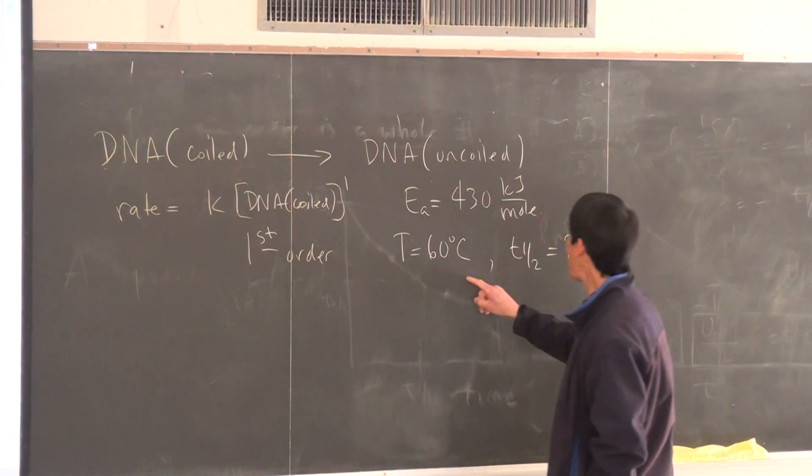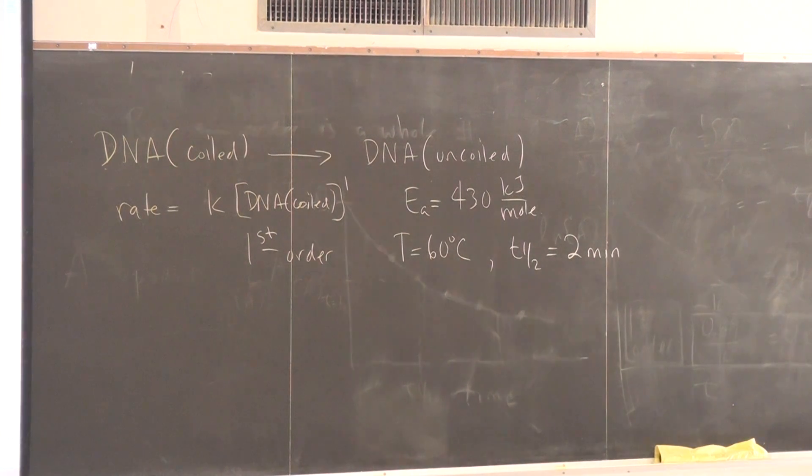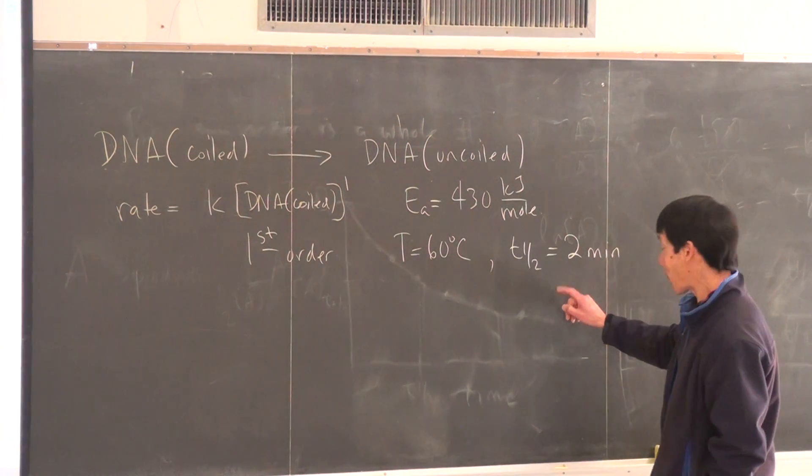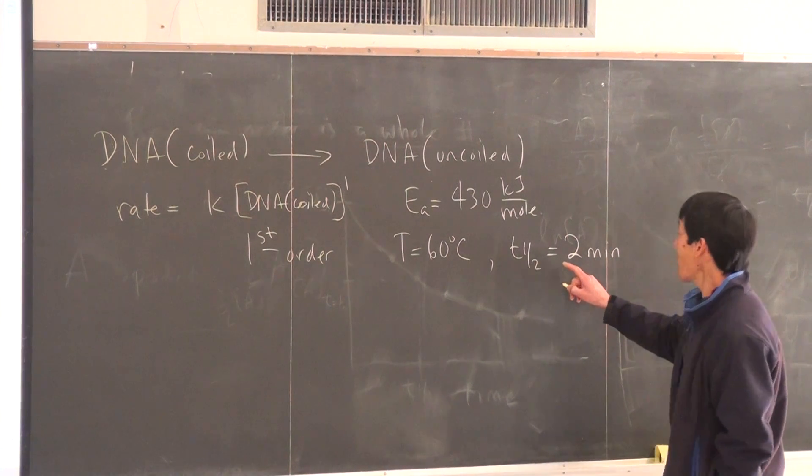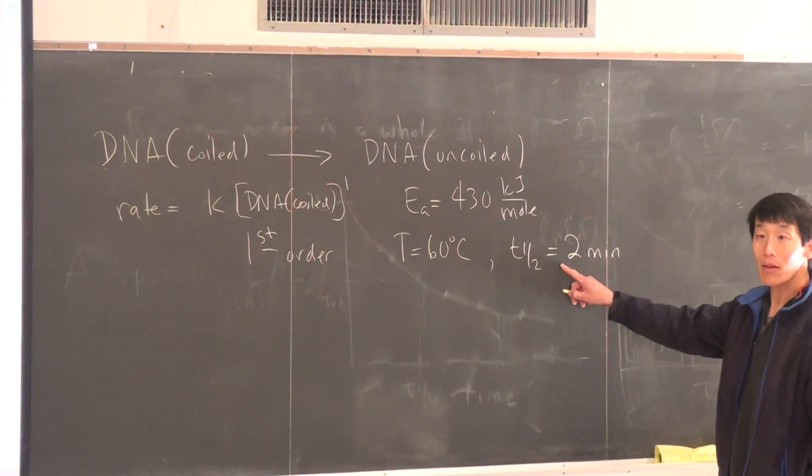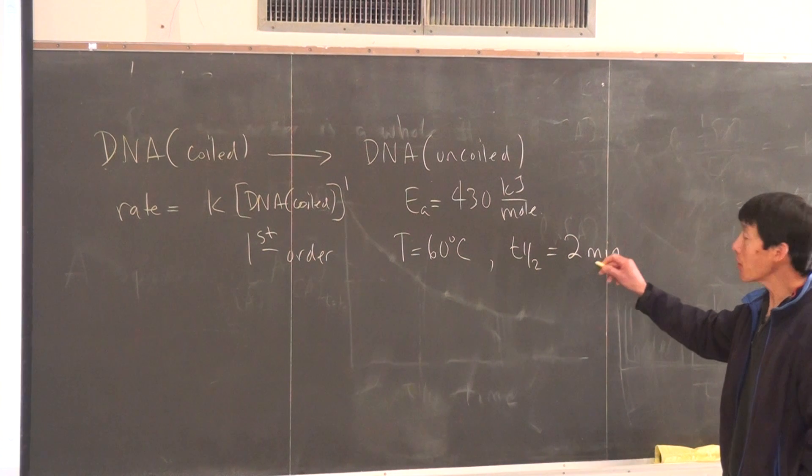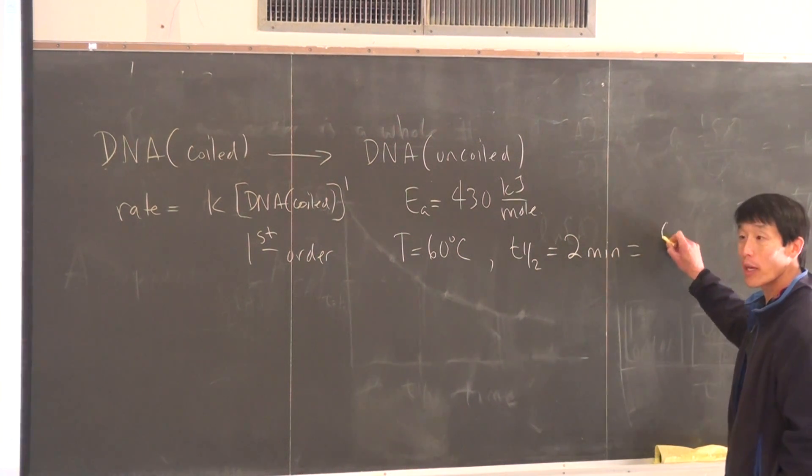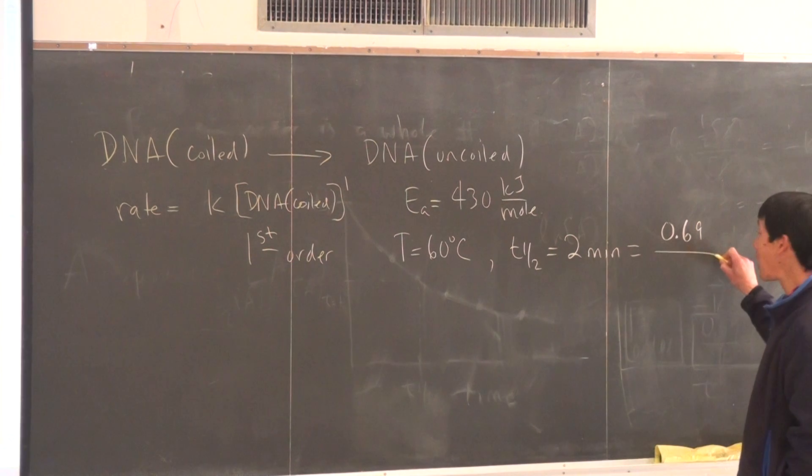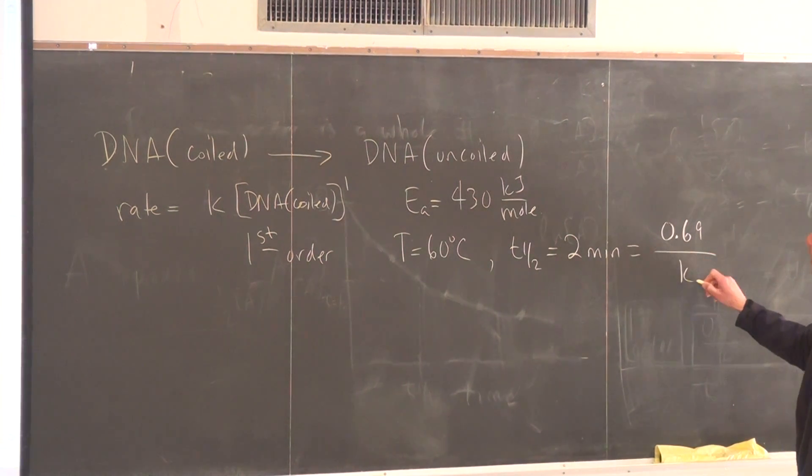So, based on this information here, can we calculate something? Another quantity. Can we find K? Yeah, we find K. For a first order reaction, how is the half-life related to the rate constant K? That's equal to 0.69 divided by K. We can actually calculate K based on the half-life.